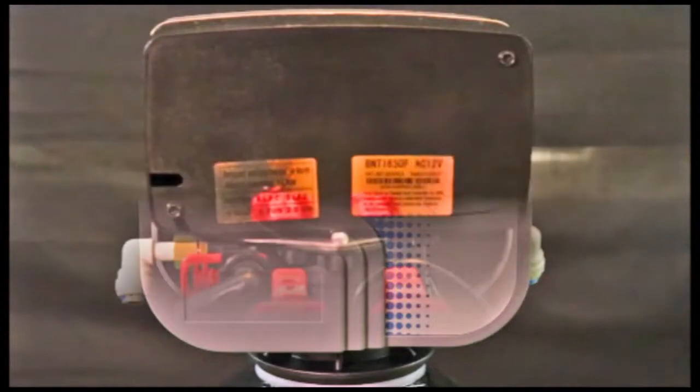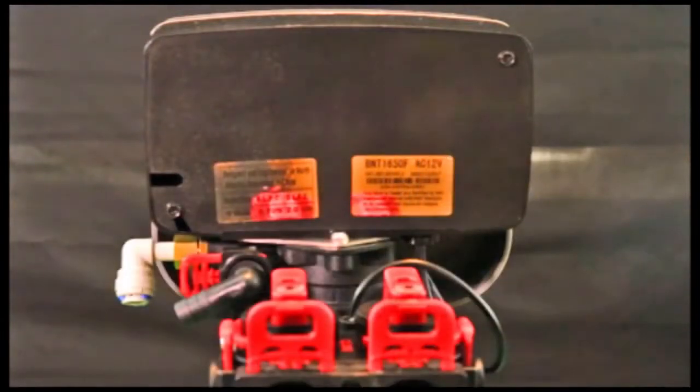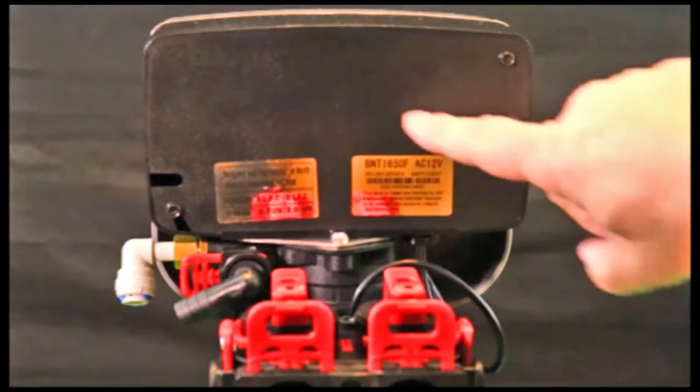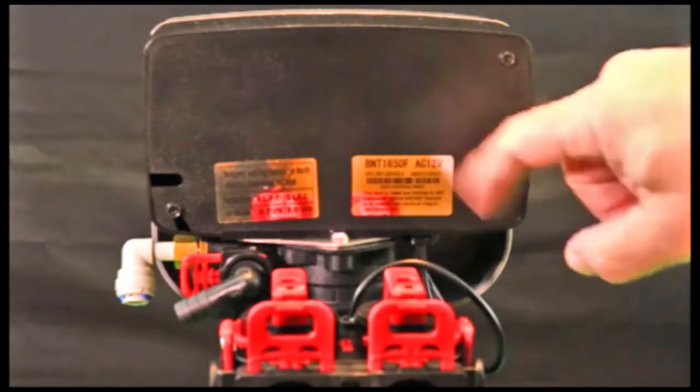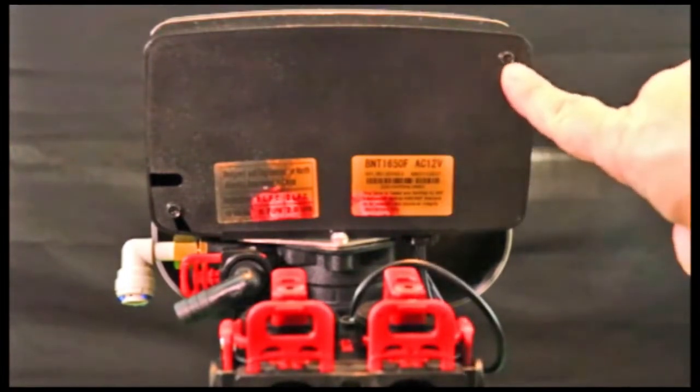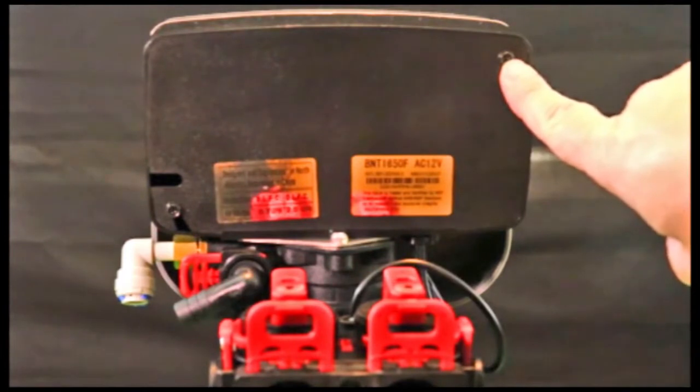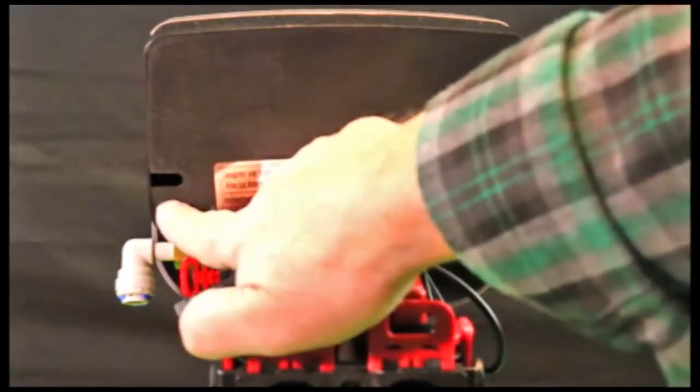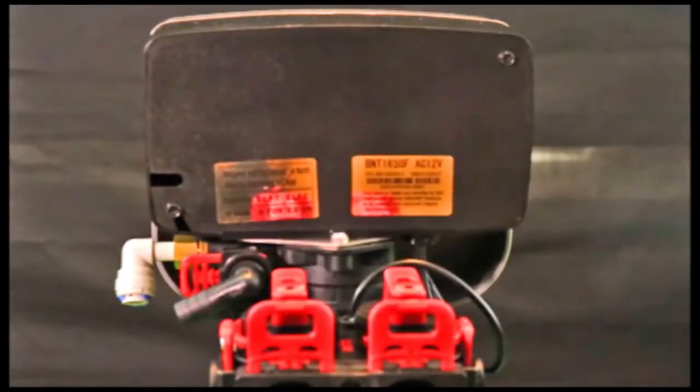This is the back of the 765 control. To access the internal parts, we will remove this plate. To do that, you only need to remove this one quarter inch self-tapping screw. This one will just loosen and I'll show you how to get that apart.